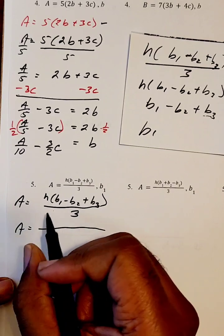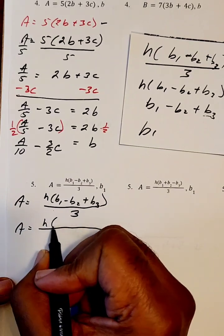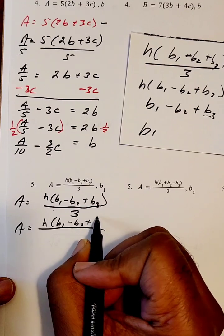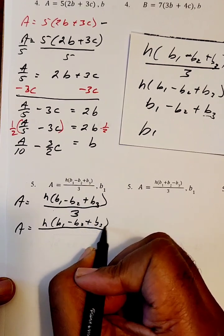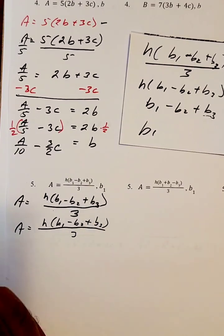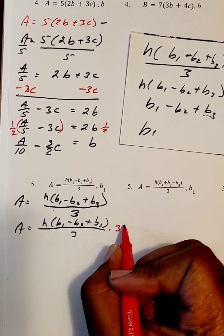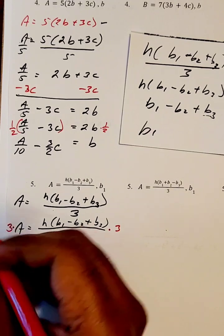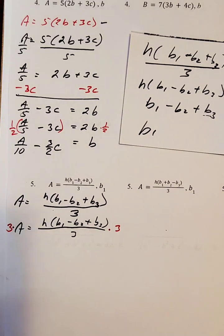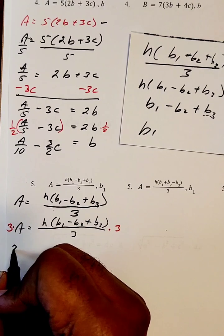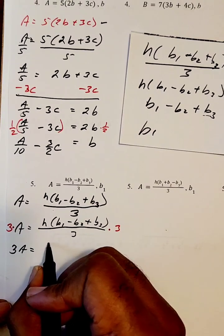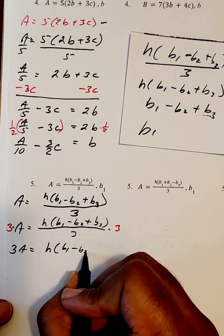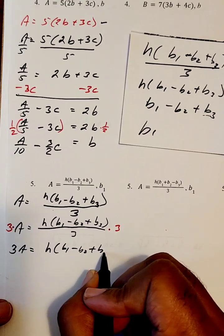Our first job is to get rid of that dividing 3. The way we're going to get rid of the dividing 3 is by using multiplying 3. I'll put the multiplying 3 on this side — times 3 — so these will cancel, and what we do to one side we do to the other, so I'll put times 3 over here as well. What we end up with is 3A equals H times the quantity B1 minus B2 plus B3.